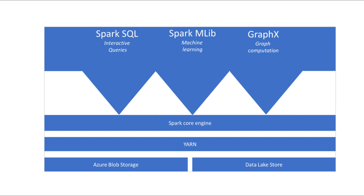You can have different functionalities sitting on top of the Apache Spark core engine that you add as your analytics require. Examples include adding Apache Spark SQL to perform interactive queries for exploratory data analysis, Spark MLlib for machine learning, and GraphX for graph computation. These functionalities enable you to set up different workloads on a single platform.